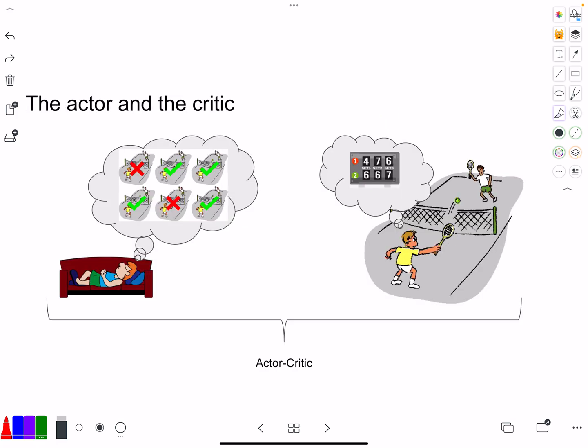In the actor-critic architecture, this is what you have. You have an actor and then you have a critic. The critic here I'm representing by the guys playing and then knowing the score, having that awareness of the score and being able to predict whether it's going to do well or not so well.